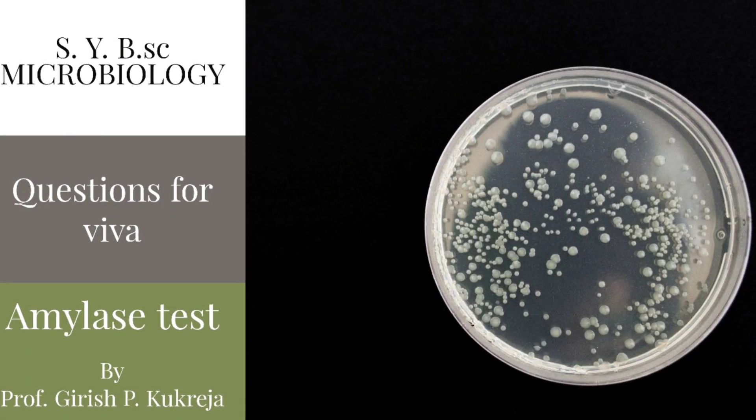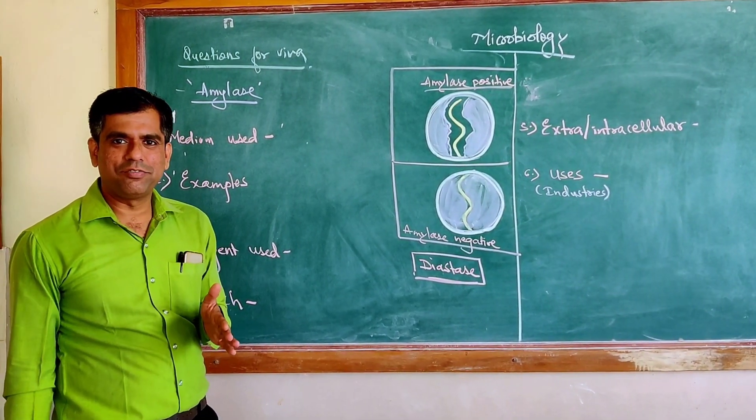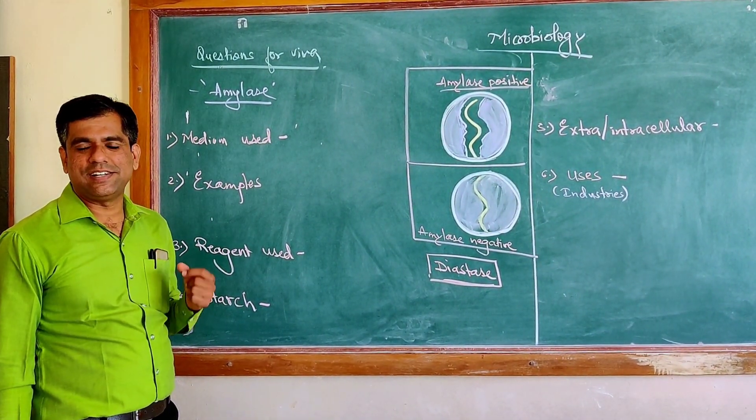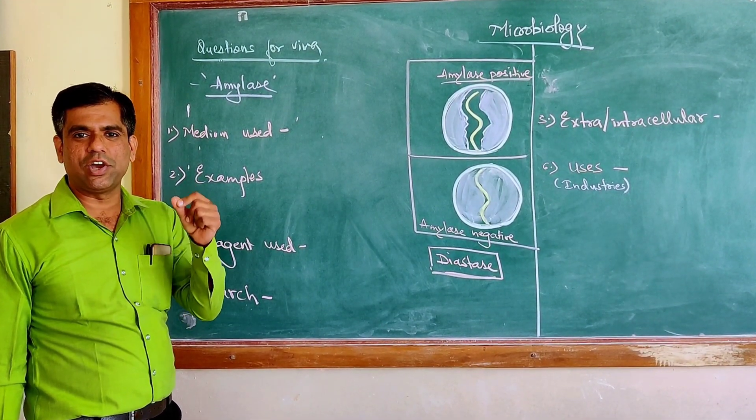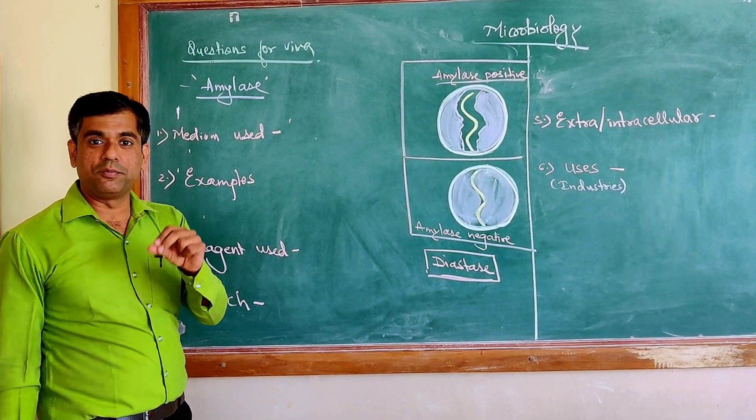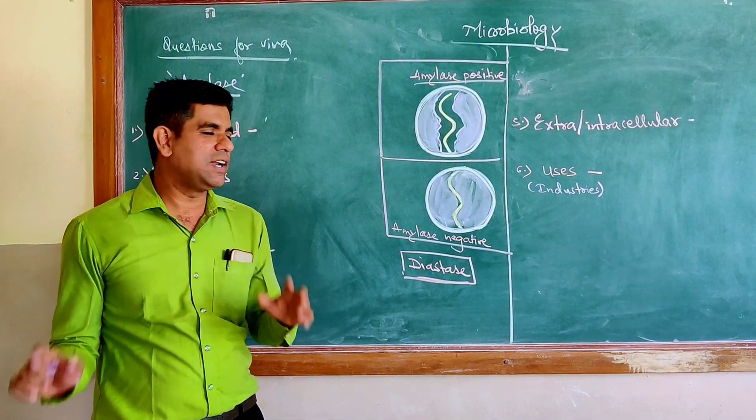Hi friends, today we will be talking about the questions asked for the viva if you are facing for BSC microbiology for this particular practical: detection of amylase producing organism, or detection of amylase from a given particular organism, or to test whether a particular organism is amylase positive or negative.